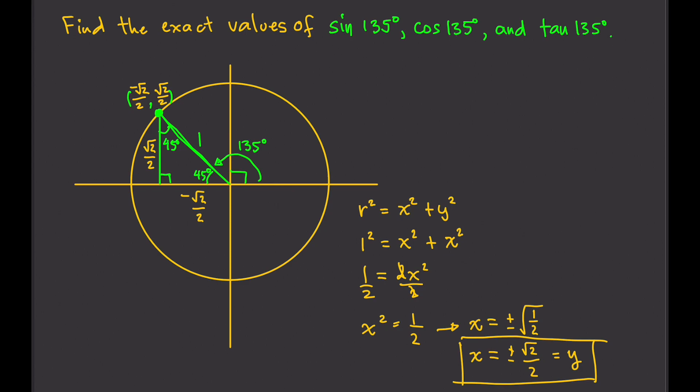So, therefore, sine of 135 degrees equals y, which is equal to positive square root of 2 over 2. So, sine of 135 degrees equals x, that's negative square root of 2 over 2.